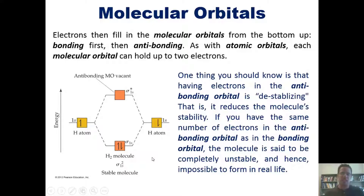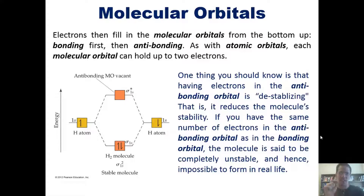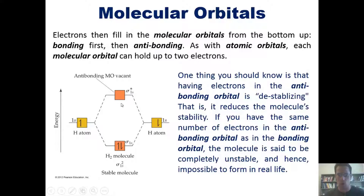In theory, that completely destabilized molecule would be impossible to form. If we took a molecule of H₂ and bombarded it with two additional electrons, those electrons would have to go into the anti-bonding orbital. The number of anti-bonding electrons would then equal the bonding electrons, all of the stability conferred by the bonding electrons would be negated by the destabilization from the anti-bonding electrons, and that molecule would blow apart.